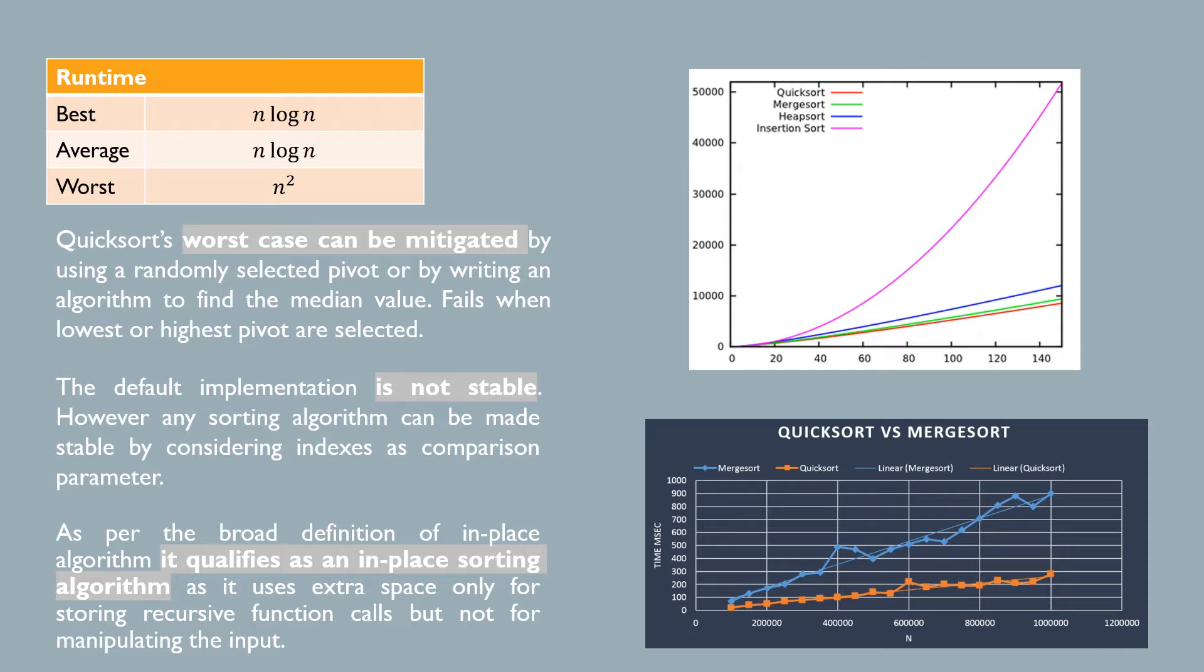Well, apart from the fact that the worst case implementation rarely occurs, Quicksort also has a constant space complexity as per the broad definition.